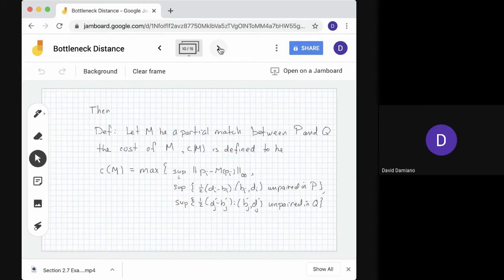With this, we can define something called a cost function. The cost of M will be the maximum value of three quantities. The first quantity is just the maximum or sup of the distances between the points P_i and their paired points M(P_i). The second is we take the unpaired points in P, take the maximum value of the distance between those and the diagonal points. That's the one half D_i minus B_i that we've just seen. And we do the same thing for the unpaired points in Q. We get three values. Here they're written as sups. If the sets are finite, it's a max. Then the cost of M will be the maximum of these three values.